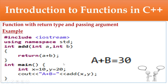To recap: int is the return type, add is the function name, int a, b are the passing arguments. The function returns an integer value using the 'return' keyword — return a + b. In the main method, declare integer x = 10 and y = 20. Call the function using cout: a + b = add(x, y). Since it has two arguments, pass x, y. It prints output a + b = 30.